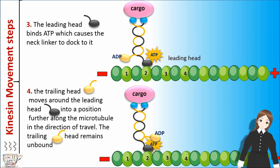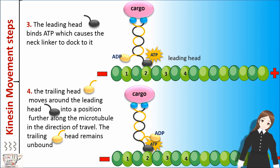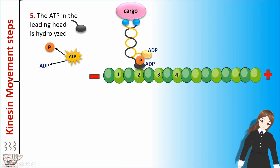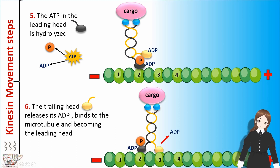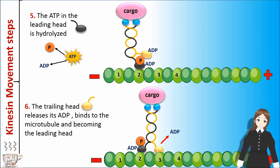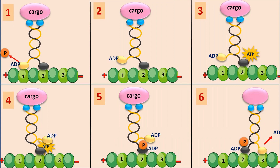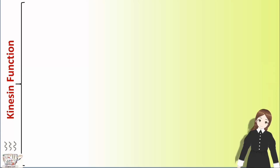Step 4: The trailing head moves around the leading head into a position further along the microtubule in the direction of travel. The trailing head remains unbound. Step 5: The ATP in the leading head is hydrolyzed. Final step: The trailing head releases its ADP, binds to the microtubule, and becomes the leading head. You can see all steps of kinesin movement together.